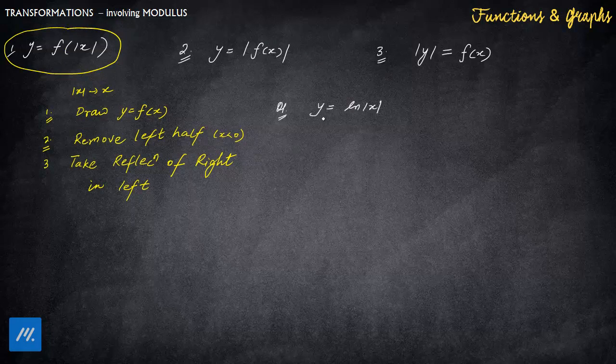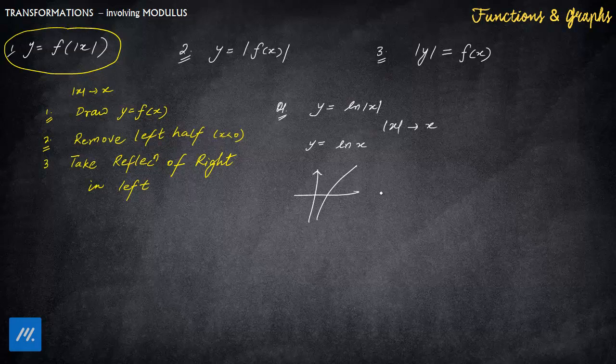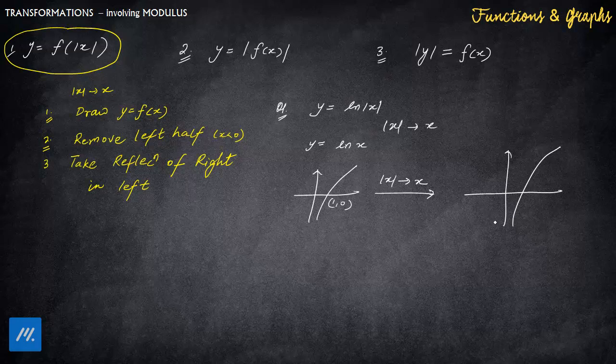So let's say we have to draw the graph of y = ln|x|. First, |x| goes to x, so this graph is nothing but the basic graph of ln x. We know that the graph of ln x is something like this, where this is (1,0). If you take |x| goes to x, what happens? Let's apply this. You have drawn the first step. Second is remove left half. So there is no left half, so no need to remove. Take reflection of right in left. Right part remains in its place, and one left part gets added.